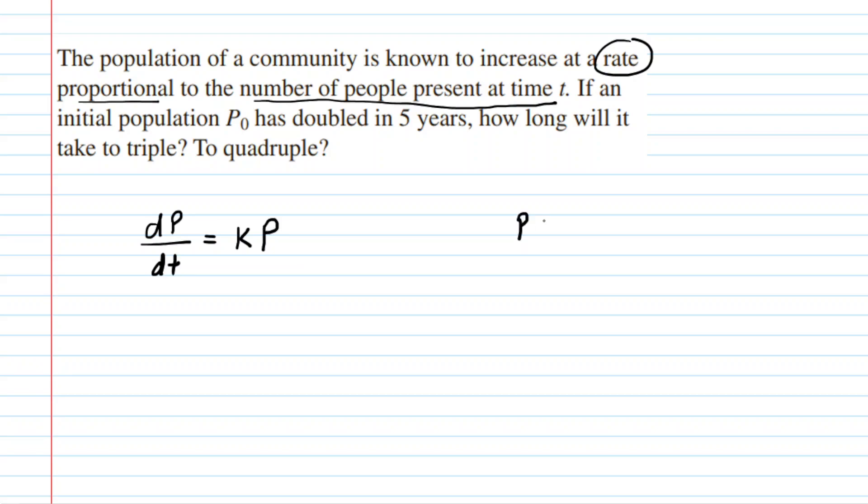Please note that P will be equivalent to P(t). So P represents the population at a particular moment in time. This is a separable differential equation, which basically means that we can gather the variable p on the left side and the variable t on the right side.